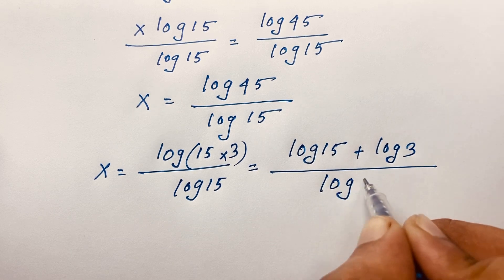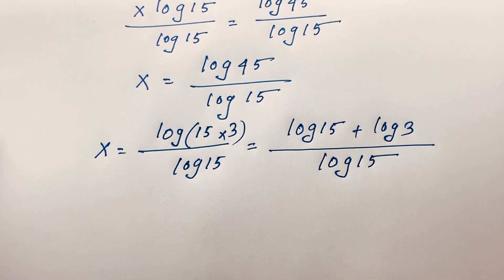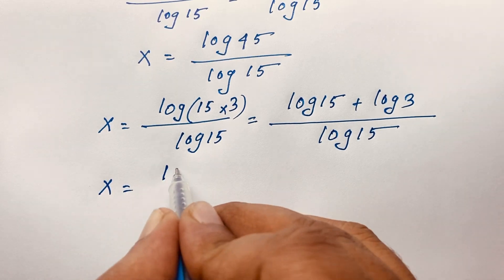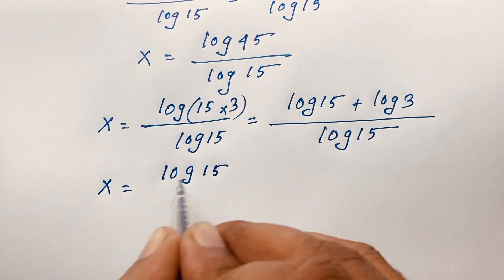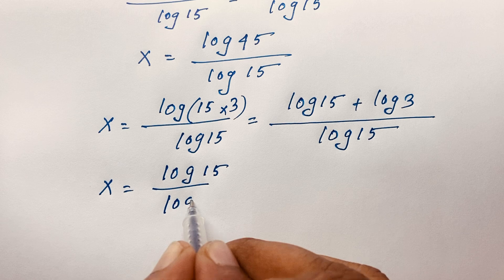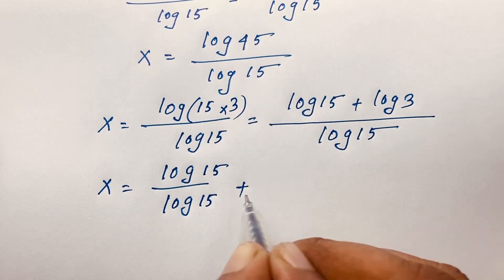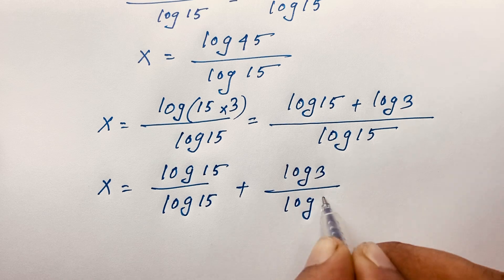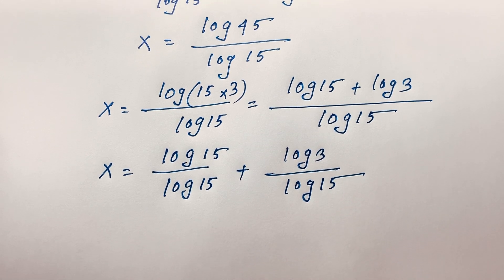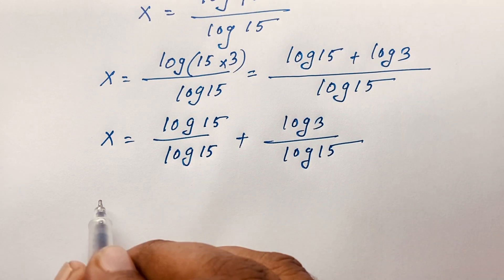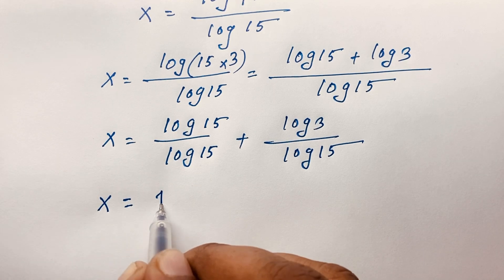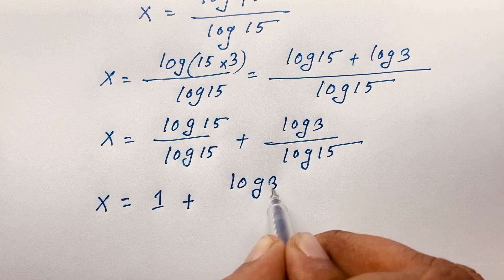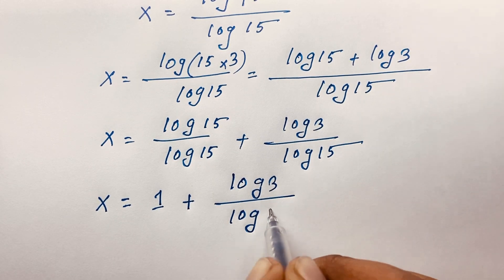So x is equal to (log 15 plus log 3) over log 15. Splitting the fraction, this becomes log 15 over log 15 plus log 3 over log 15. The first term simplifies to 1, so x is equal to 1 plus log 3 over log 15.